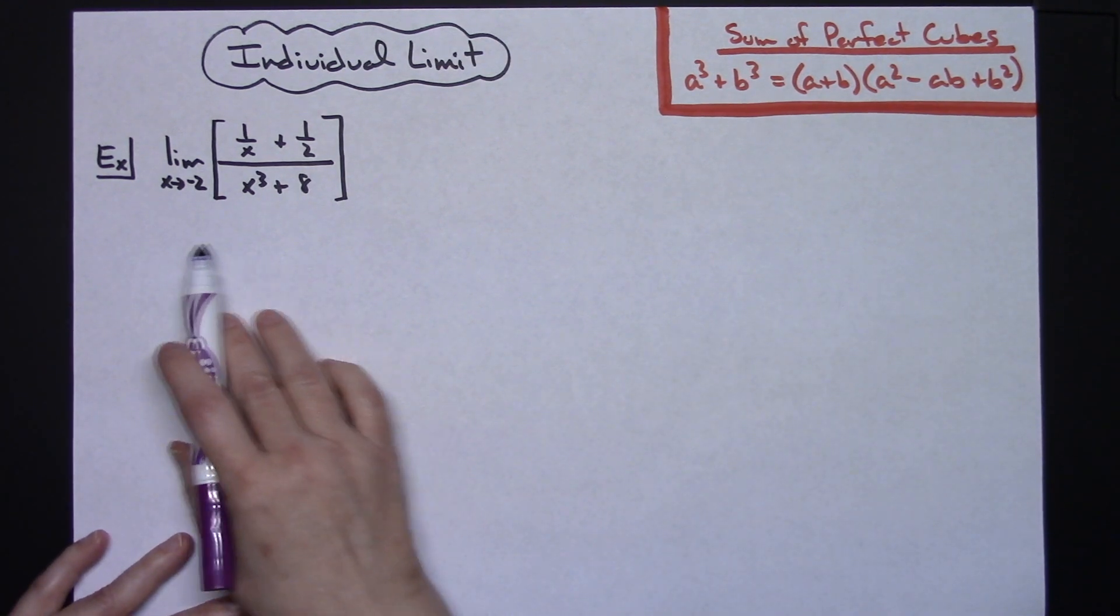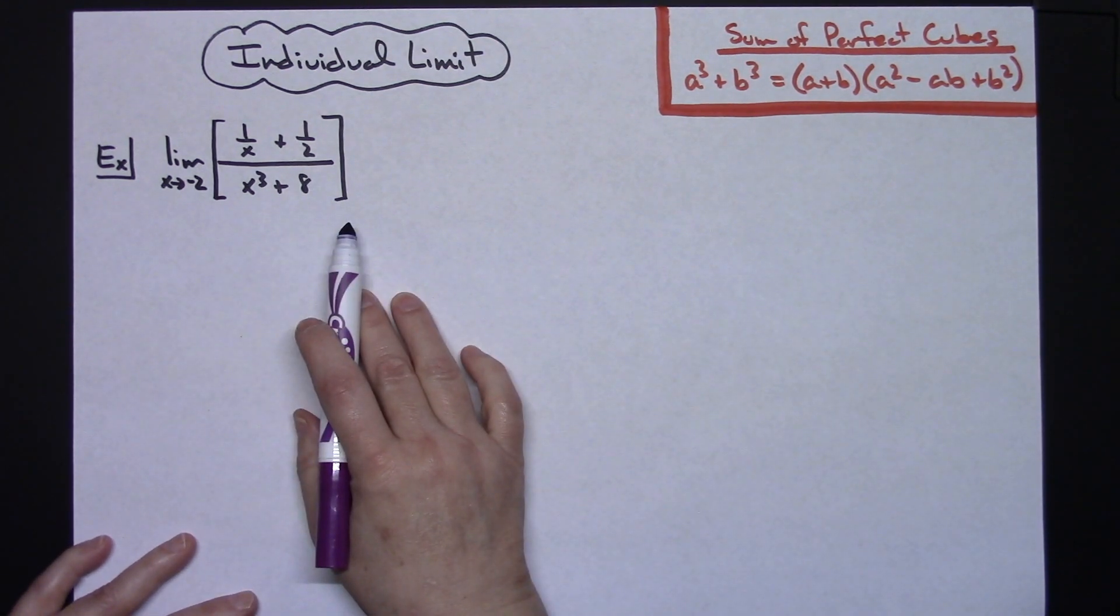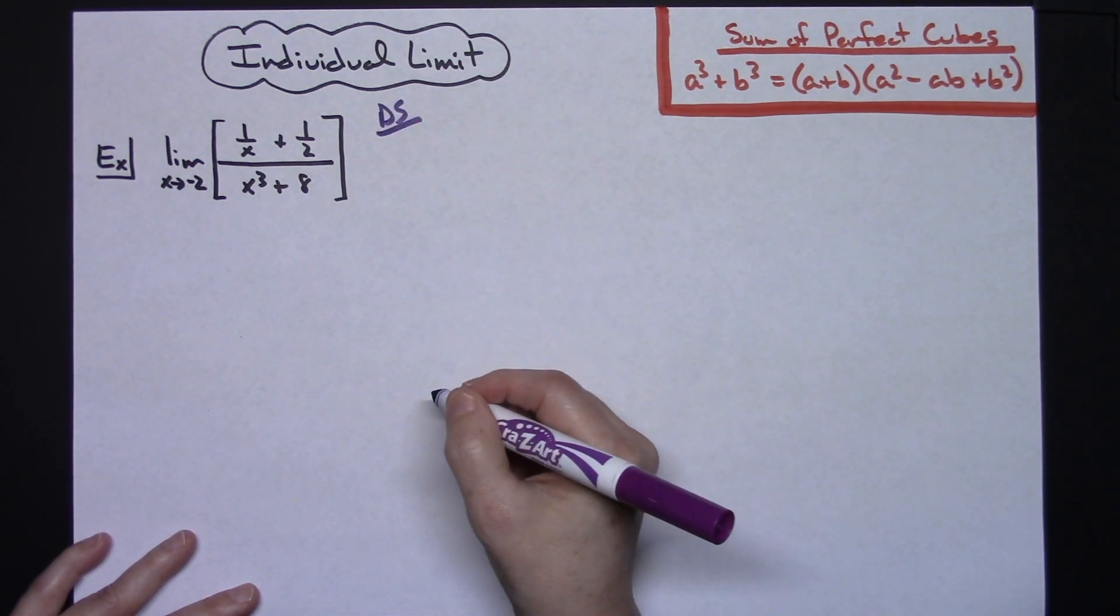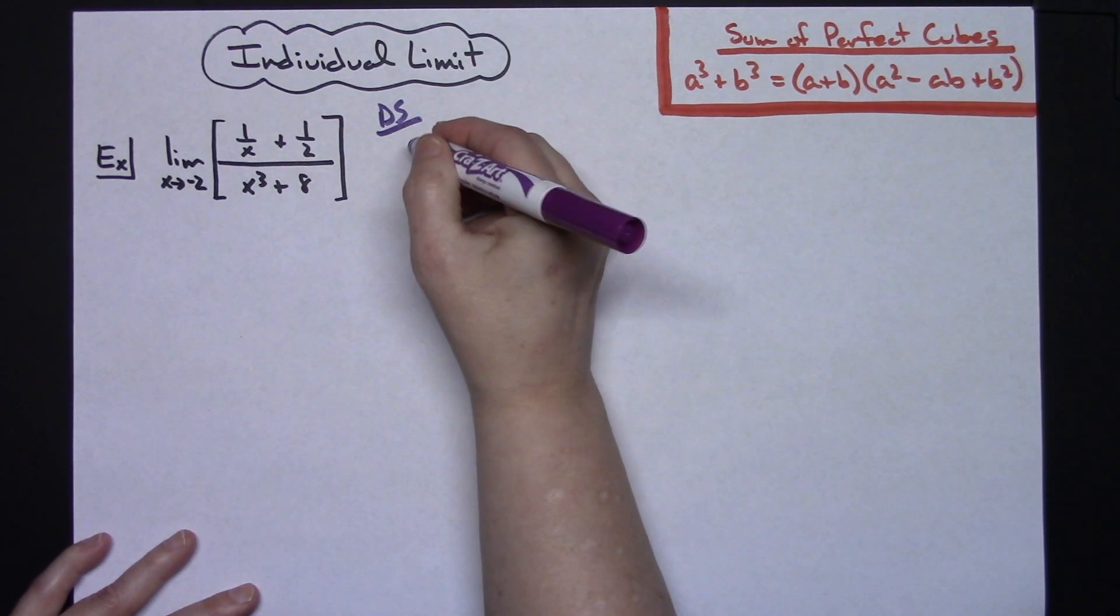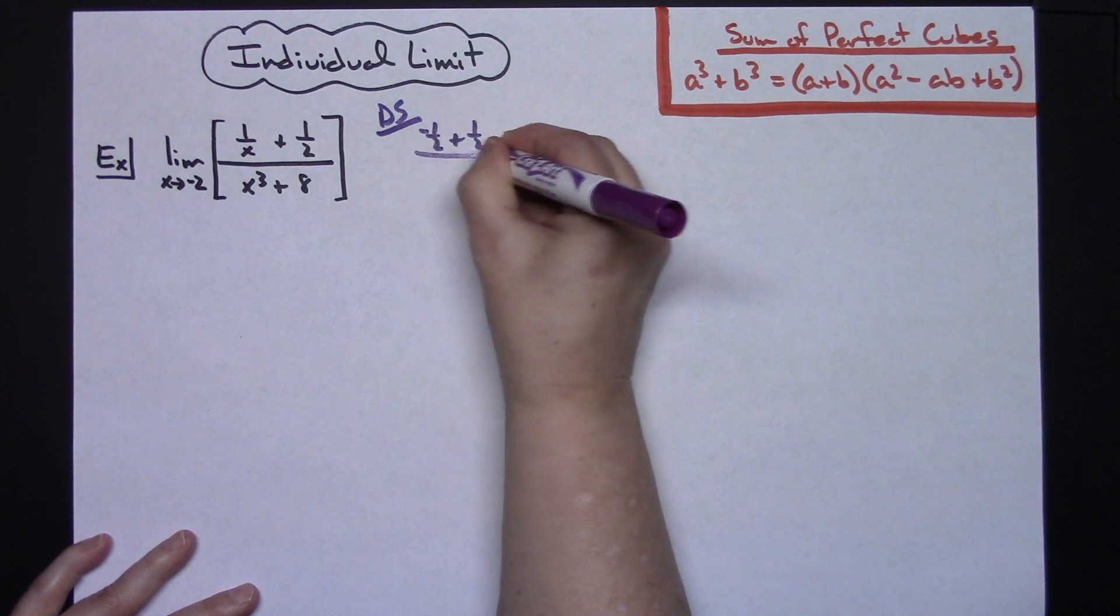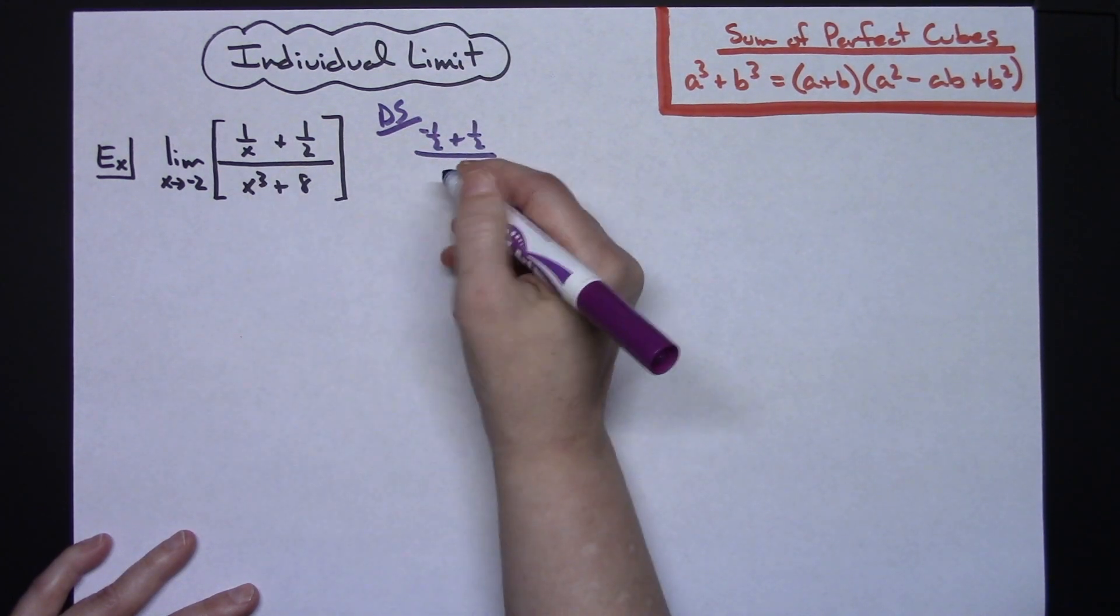To start with on this limit, you're going to need to do that direct substitution just to make sure and verify that you really do have an indeterminate form. If I plug in negative 2 there, I'll have a negative one-half plus a one-half on my numerator.